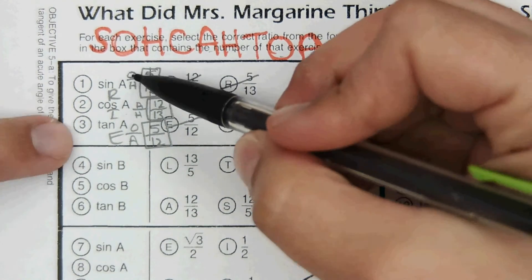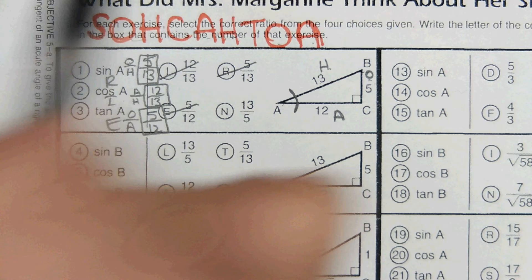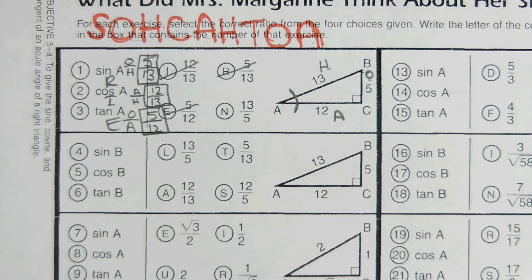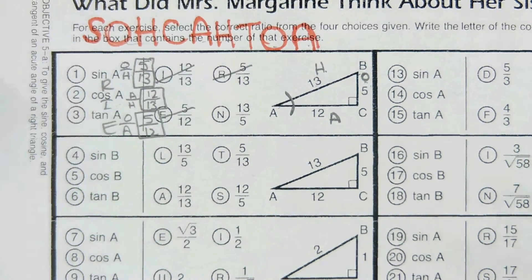So what I'm going to stop doing is writing opposite over hypotenuse, because really I'm just referencing this to figure it out. But what I do want you to have is all the ratios written out. So this is my example from my last class. She has all of her ratios written down here, and then she has her triangles labeled, and when I check your work, that's what I'm going to be looking for.